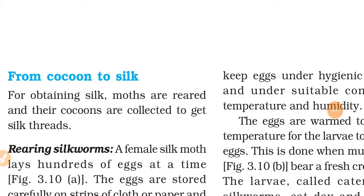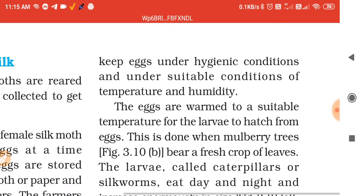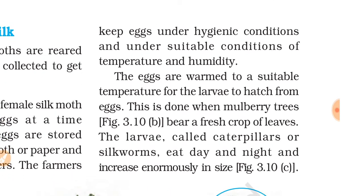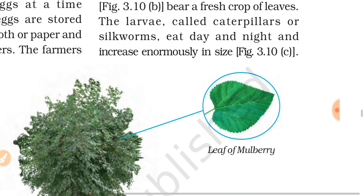Now let's read about how cocoons are transferred into silk. For obtaining silk, moths are reared and their cocoons are collected to get silk threads. A female silk moth lays hundreds of eggs at a time. The eggs are stored carefully on strips of cloth or paper and sold to silkworm farmers. The farmers keep eggs under hygienic conditions and suitable conditions of temperature and humidity. The eggs are warmed to a suitable temperature for the larvae to hatch.